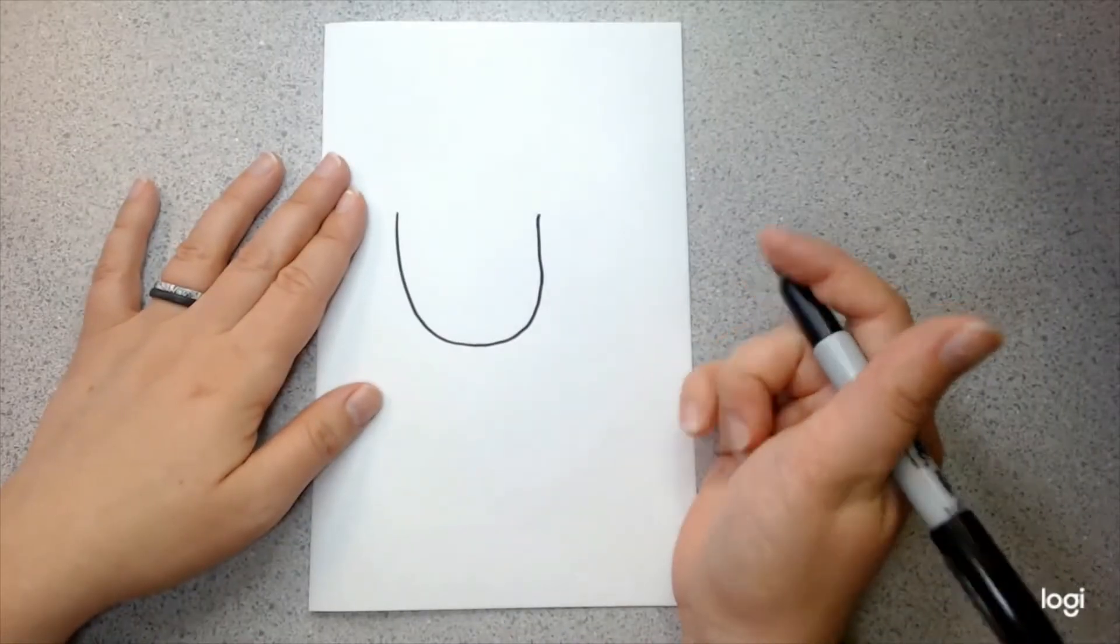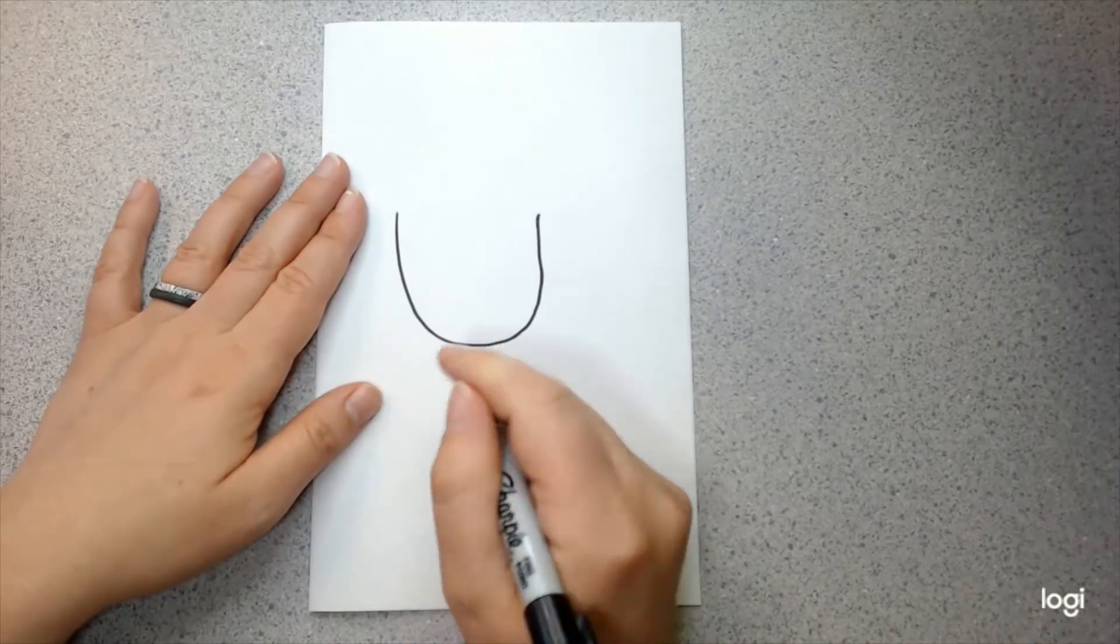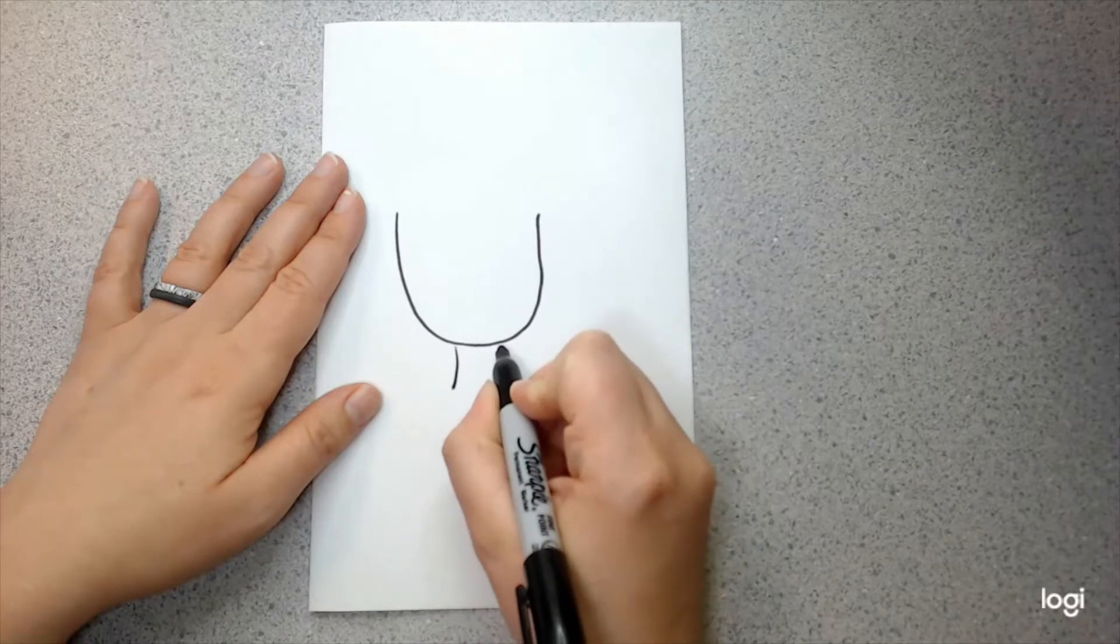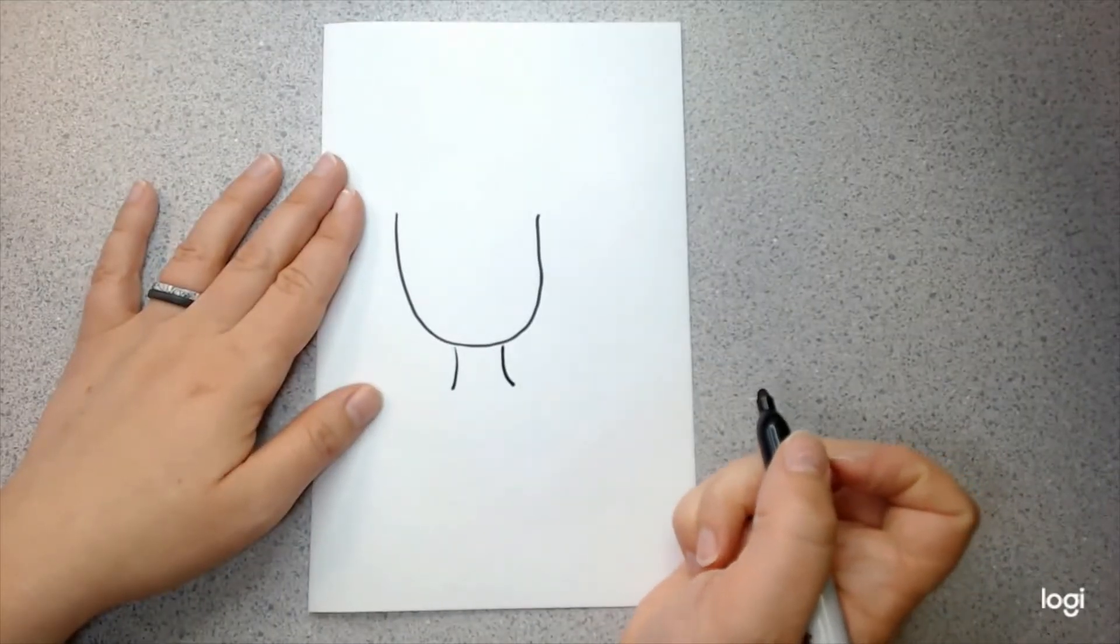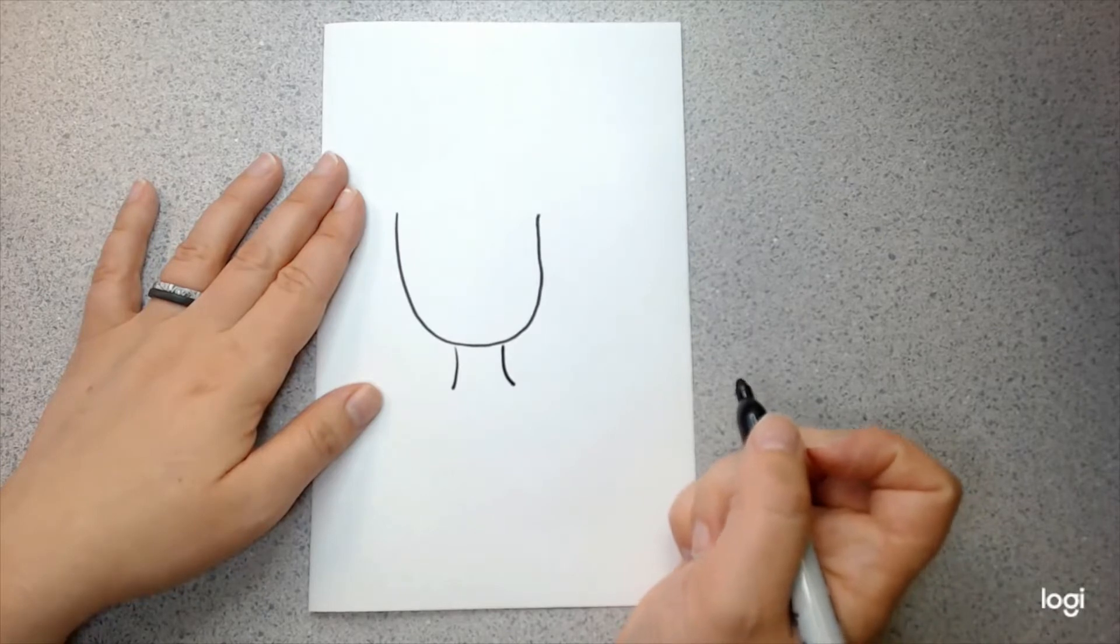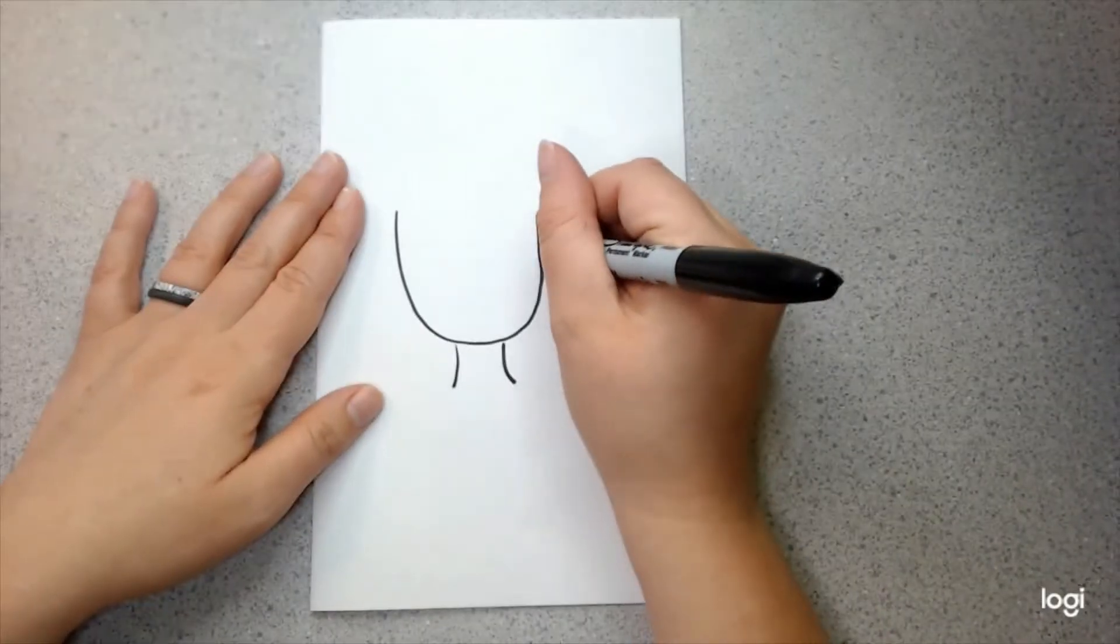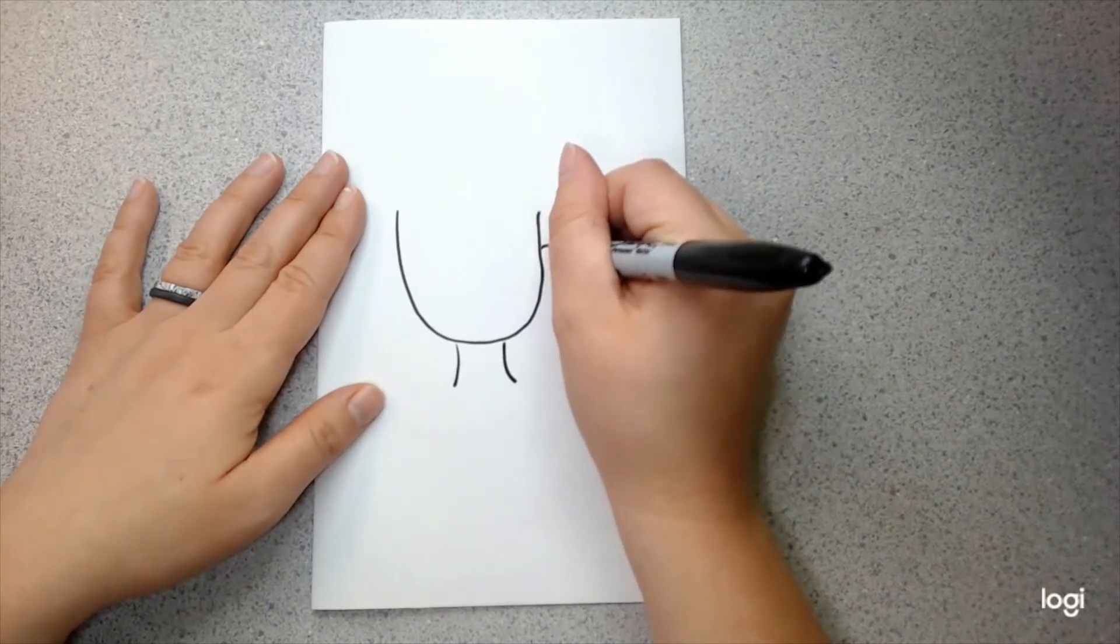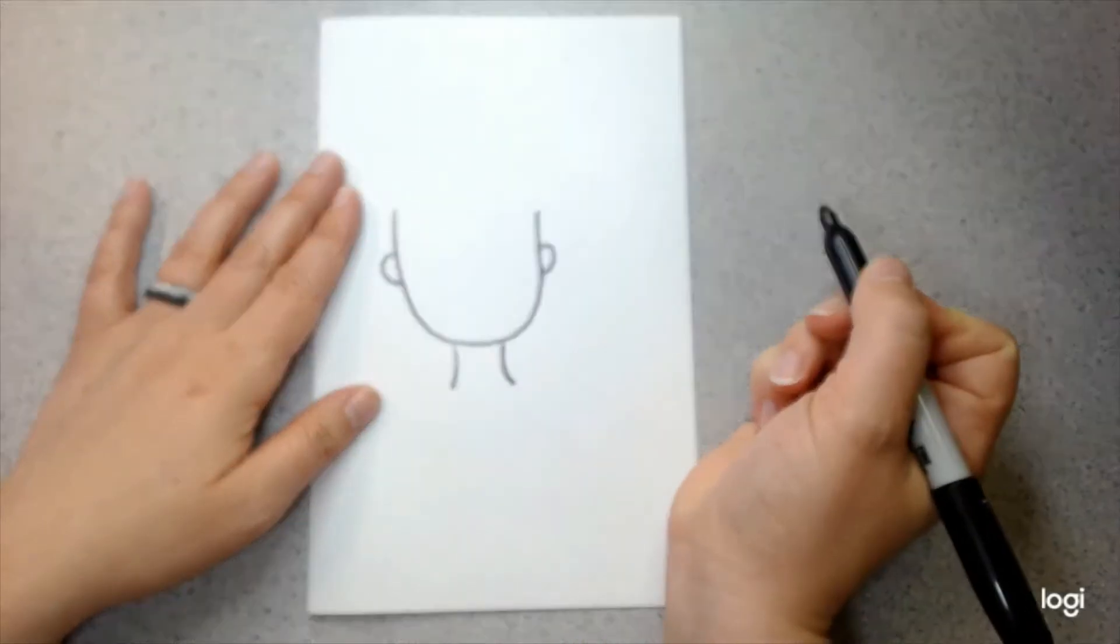Now, it's time to draw my neck. So, I'm going to go to the bottom of my shape here and draw two kind of curvy lines like that to make my neck, right? Now, I need some ears. It's kind of hard to hear without any ears. So, I'm going to do two little macaroni shapes on either side of my head, just like that.